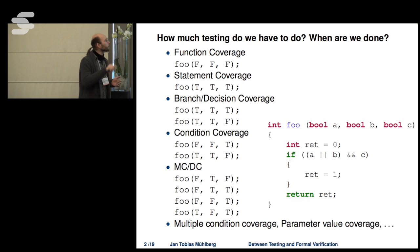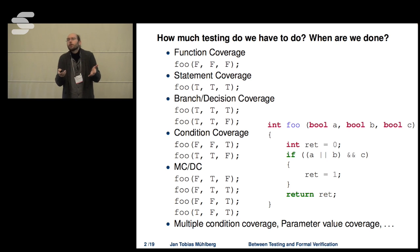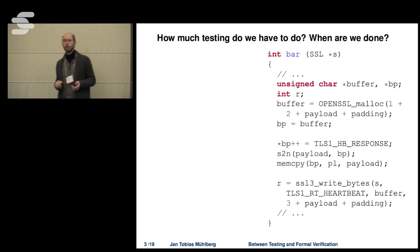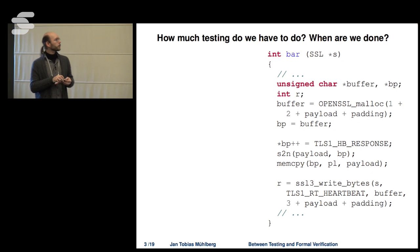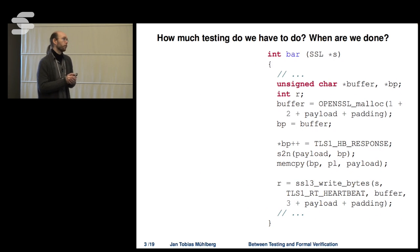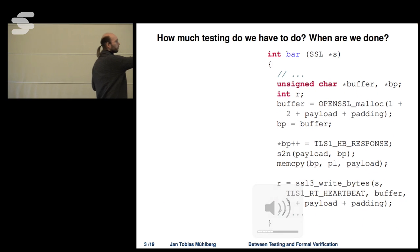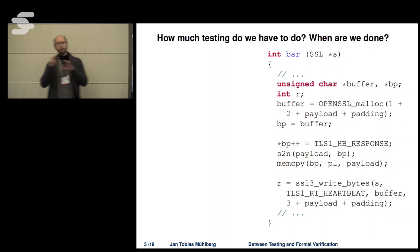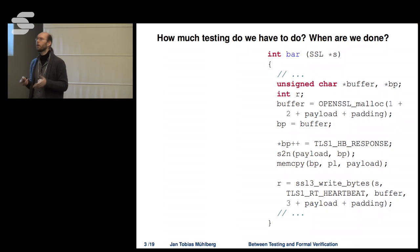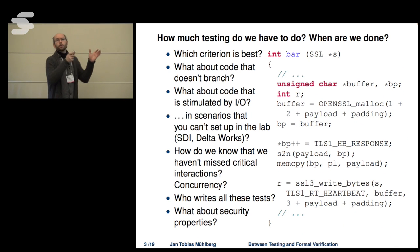That example was very simplistic with only three boolean conditions. Let's look at something more realistic. This piece of code has one big disadvantage: there are no conditionals. When have you tested this piece of software enough? You can probably infer from one constant in there that this involves SSL functionality that was found to be buggy. Which criterion would be best to test this?